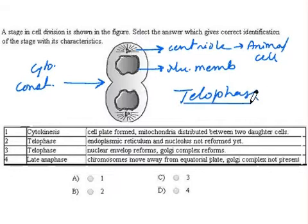Now out of the given four options, it is not cytokinesis because the constriction has just appeared. It is not late anaphase because the spindle fibers are not there.